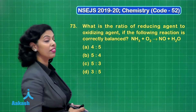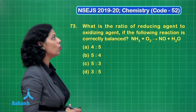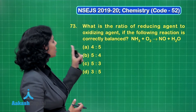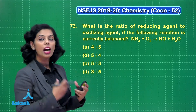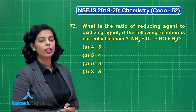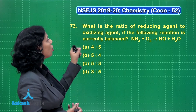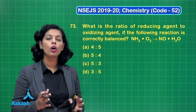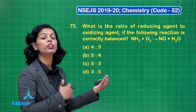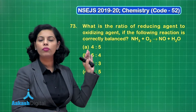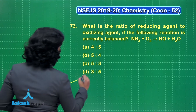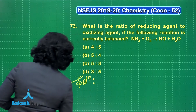Here is question number 73: what is the ratio of reducing agent to oxidizing agent if the following reaction is correctly balanced? The reaction is ammonia reacting with oxygen to give NO and H2O. You need to identify the ratio of reducing agent to oxidizing agent. First, balance the equation, then identify which substance is the oxidizing agent and which is the reducing agent.